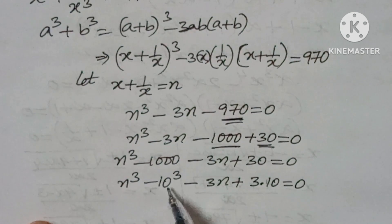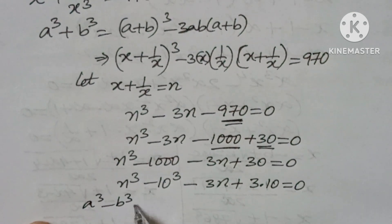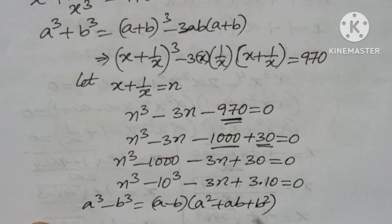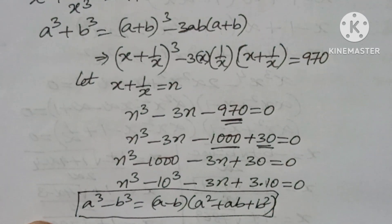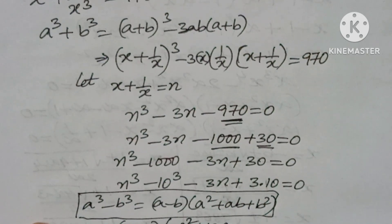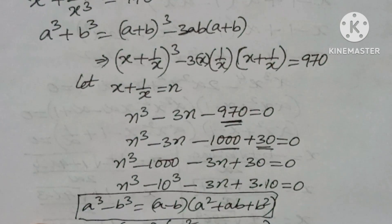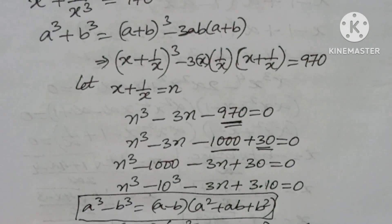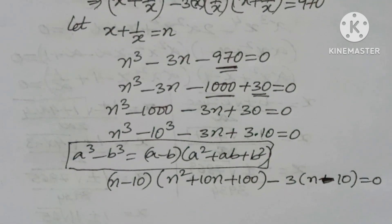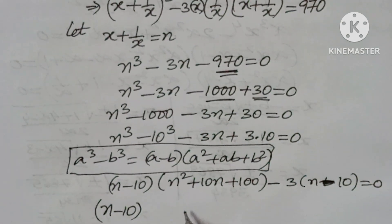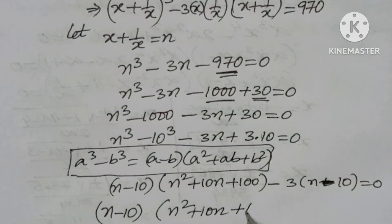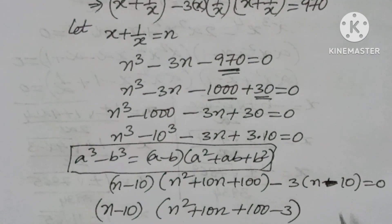Now we apply the a³ − b³ factoring formula: a³ − b³ = (a − b)(a² + ab + b²). So we get (n − 10)(n² + 10n + 100) − 3(n − 10) = 0. Taking (n − 10) as a common factor gives (n − 10)(n² + 10n + 100 − 3) = 0.